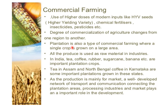Plantation farming is also a type of commercial farming where a single crop is grown over a large area and all the produce is used as raw material for industries. The main crops grown through plantation farming in India are tea, coffee, rubber, sugarcane, and banana. Tea is grown in Assam and North Bengal; coffee in Karnataka — these are some important plantation crops.